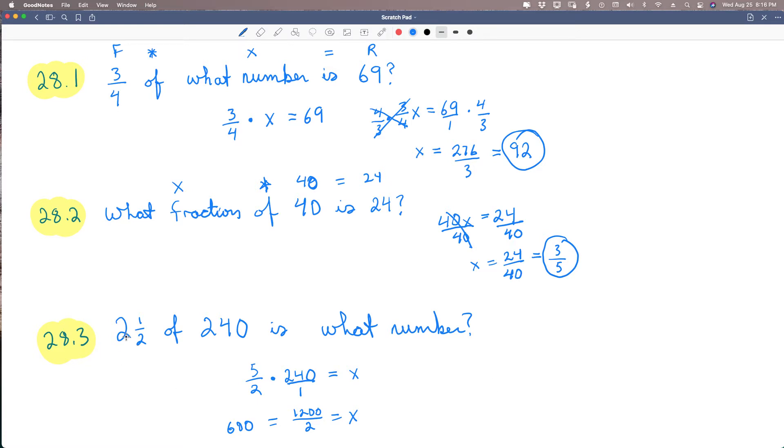And basically what we're saying is 2 and a half times 240 is 600. It's pretty easy once you remember fraction times, then your number is result. If you can keep it in that format, you can fill in, just drop in those blanks and you can solve it every single time. All right, moving on. Pause and take notes if you need to.